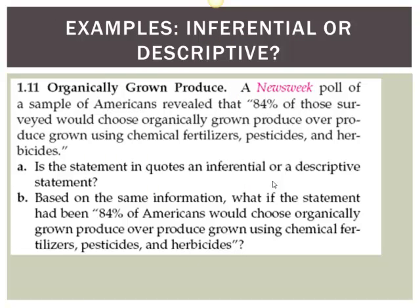A Newsweek poll of a sample of Americans revealed that 84% of those surveyed would choose organically grown produce over produce grown using chemical fertilizers, pesticides, and herbicides. Is this inferential or descriptive? It actually says 84% of those surveyed — so that's descriptive. They're describing the percentage of those actually surveyed, not trying to extrapolate to everybody. But if the statement had been '84% of Americans would choose organically grown produce,' that version would be inferential. We have to read those statements carefully.